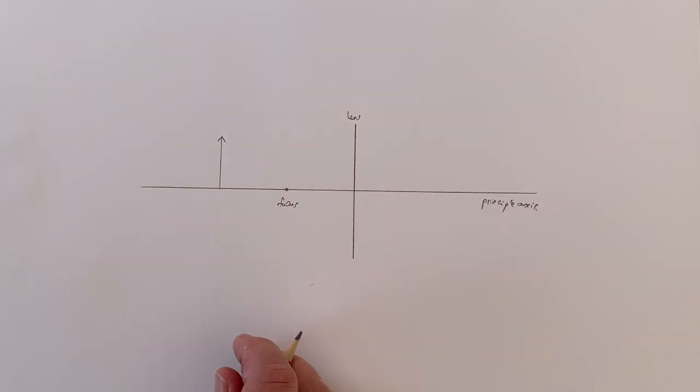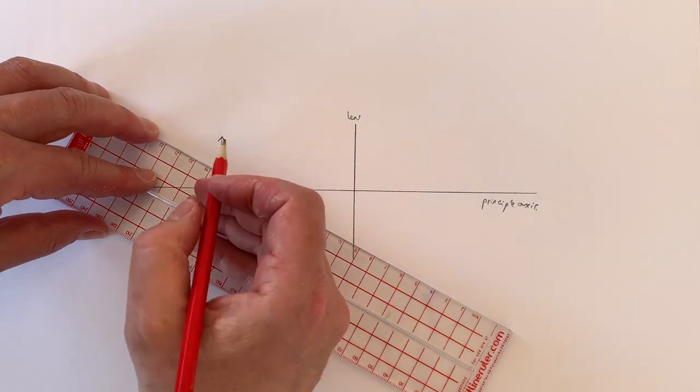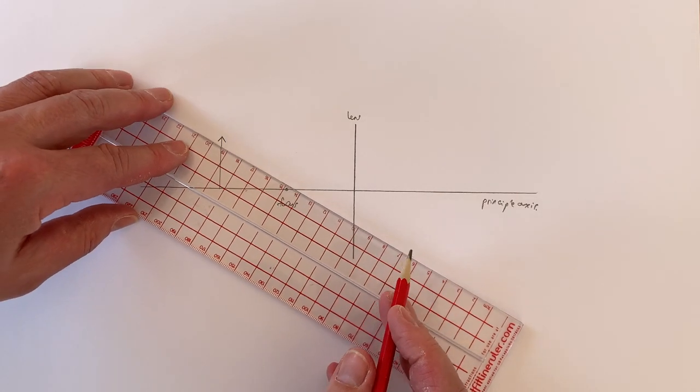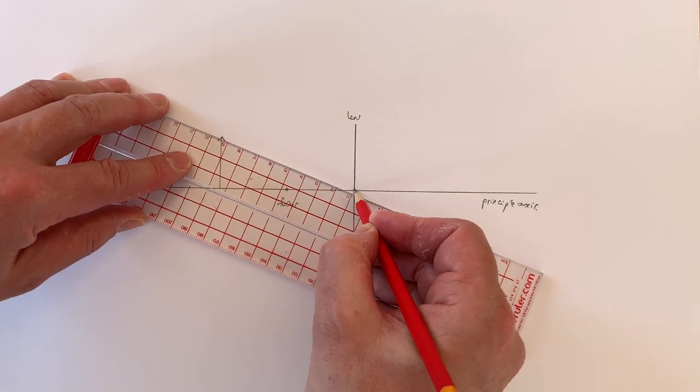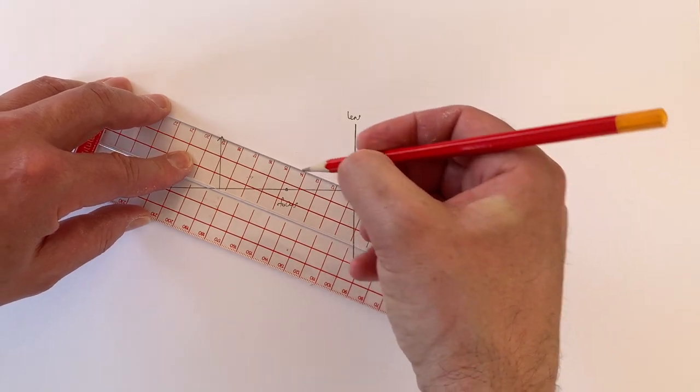Now we found, first of all, that any light leaving the top of the object that travels through the centre of the lens will just keep going in a straight direction. So light hitting the lens like that is just going to keep travelling straight in that direction.